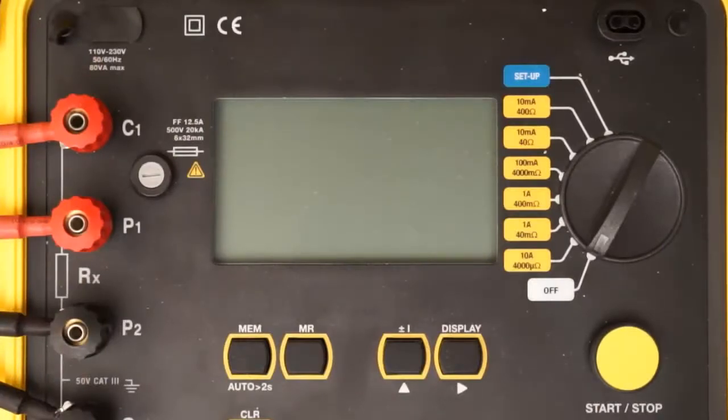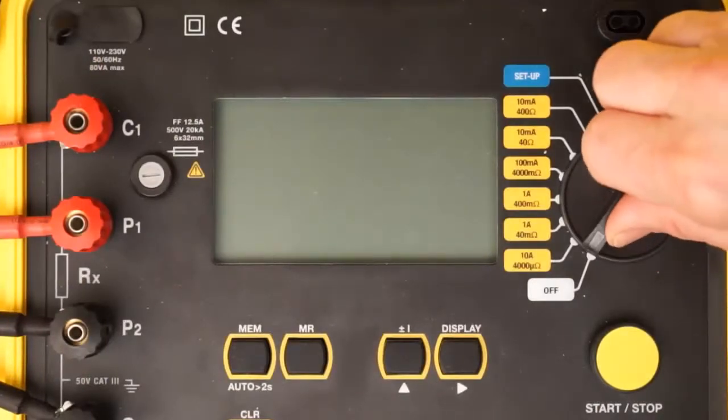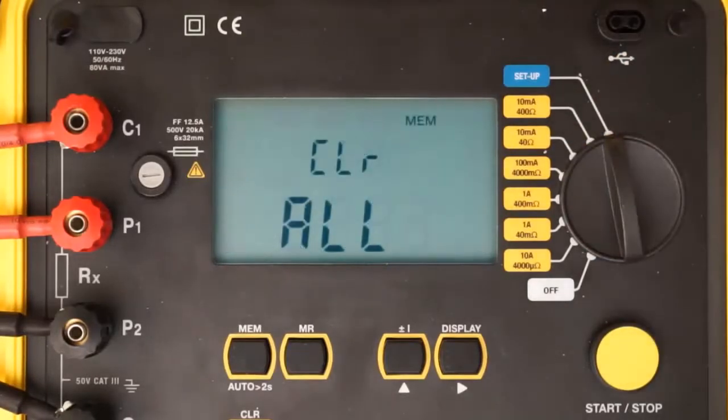We begin our demonstration by turning the dial on the Model 6240 to setup. After a few seconds, the first setup screen appears. Setup screens allow you to set several configuration parameters on the instrument. Use the right button to cycle through the setup screens to ensure the settings are appropriately configured for the test you want to run.